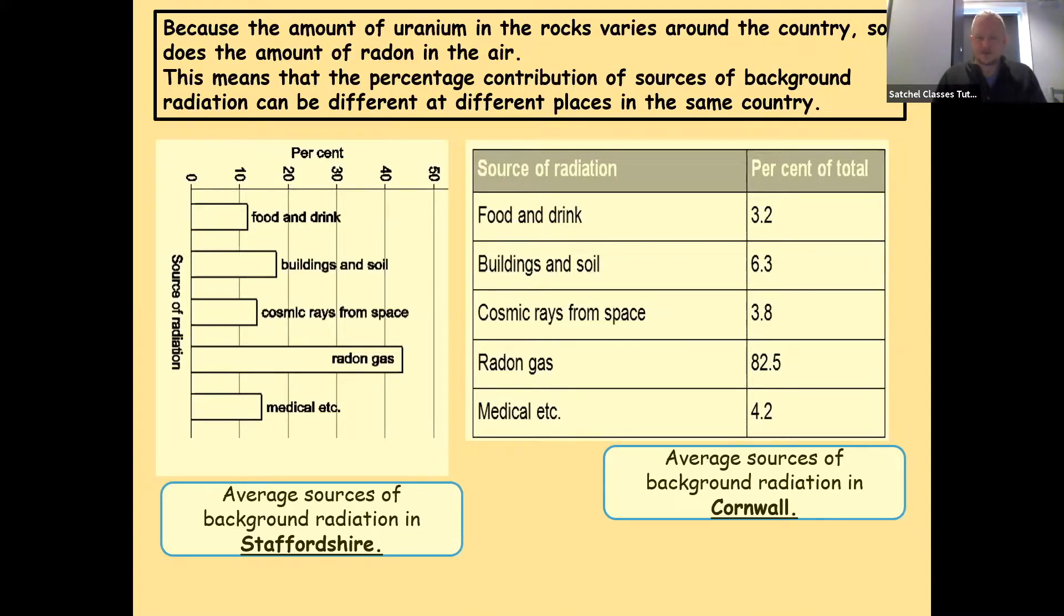I have seen questions like this pop up for six marks where they give you the average for the UK and then the average for two different places in the UK and ask you to compare and contrast. On the left, we have the average sources of background radiation in Staffordshire. On the right, the average sources of background radiation in Cornwall.